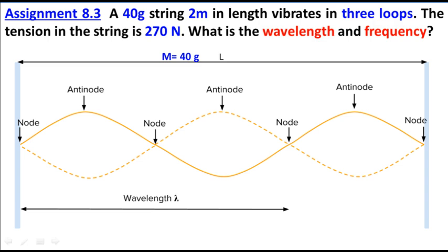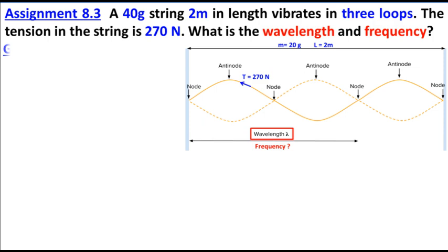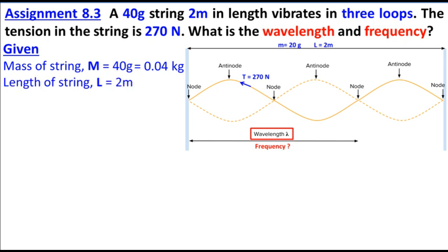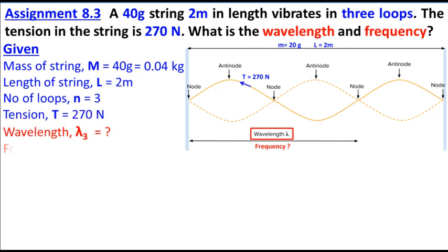The mass of the string is 40 grams, and the length is 2 meters. The tension in the string is 270 newtons. Let's note down the given values: mass M = 40 grams = 0.04 kg, length is already given in meters, number of loops n = 3, tension T = 270 newtons. We need to find wavelength and frequency.